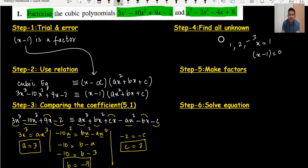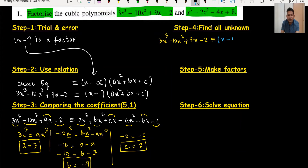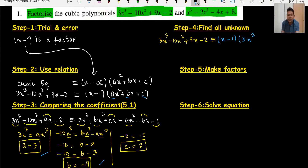Now that we have all the values — a = 3, b = −7, c = 2 — we can write the factored form. The cubic equation 3x³ − 10x² + 9x − 2 equals (x − 1)(3x² − 7x + 2). We have one linear factor and one quadratic factor, but we need to factor the quadratic further.